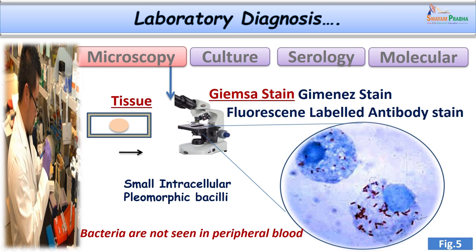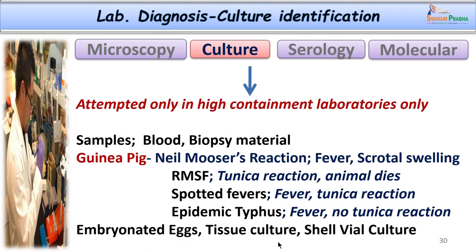Under the Giemsa stain we can see intracellular organisms stained bluish purple; they are typically pleomorphic in nature. Culture should not be attempted casually as these are highly infectious agents. The same blood and biopsy material is used; we can grow them in the yolk sac of chick embryo and also use guinea pig or mouse to demonstrate the Neil Muser's reaction.